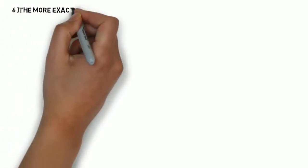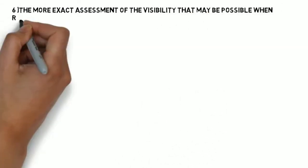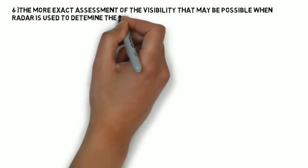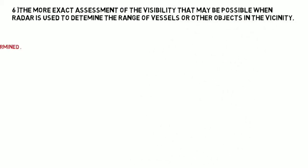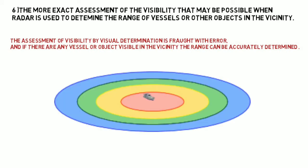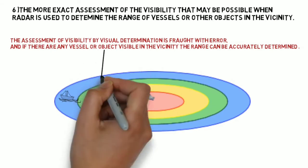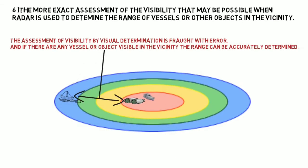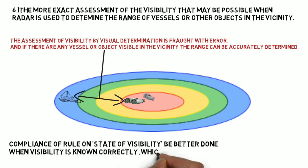Point 6: The more exact assessment of the visibility that may be possible when the radar is used to determine the range of the vessel or other objects in the vicinity. The assessment of visibility by visual determination is fraught with error, and if there are any vessels or objects visible in the vicinity, the range can be accurately determined. Compliance of the rule on state of visibility can be better done when visibility is known correctly, which can be easily determined by radar.